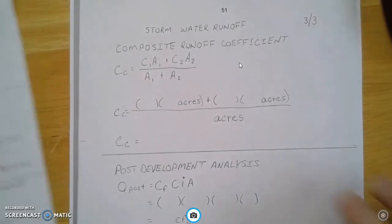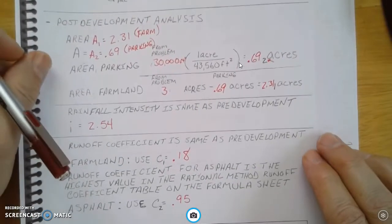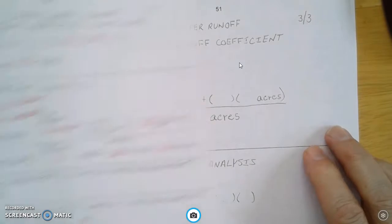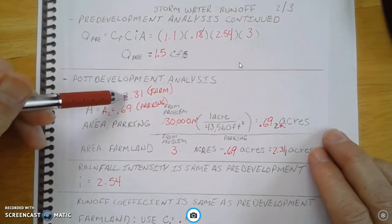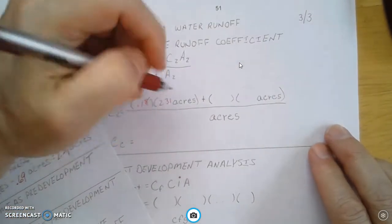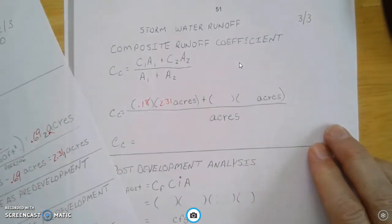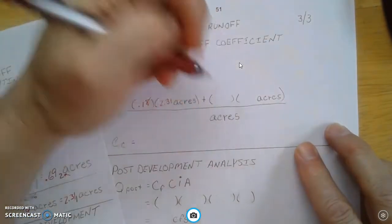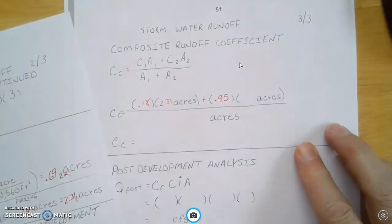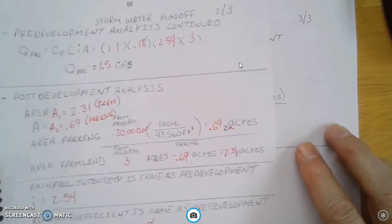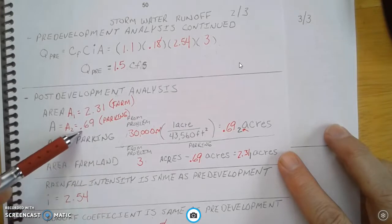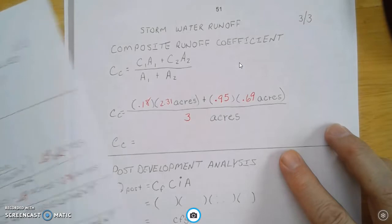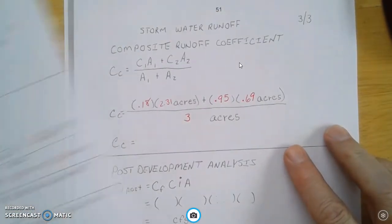So C1 from over here is going to be 0.18. So on this page, I'm going to put in 0.18. A1, again, from this page, A1 is going to be 2.31, 2.31 acres plus, and this is C2. So let's see, find C2, which is the runoff coefficient, 0.95, 0.95 times the acreage, which is A2, which is going to be 0.69. And we're going to divide that all by 3 because it's 3 acres. That was the area 1 plus area 2.